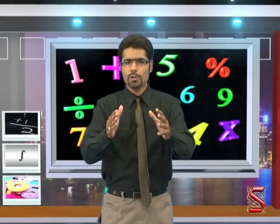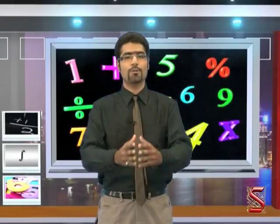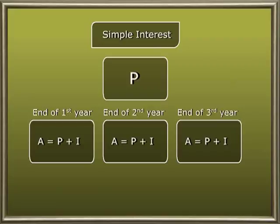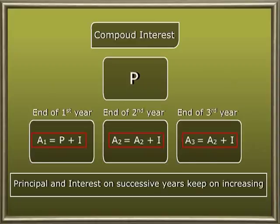Compound interest — most students find this very interesting because it's a little tricky, so it generates interest all the more. The main thing to observe is that in simple interest the principal remains the same throughout the period, but in compound interest the interest is added to the principal and the total amount is taken as the principal for the next year. Thus both principal and interest on successive years keep on increasing.